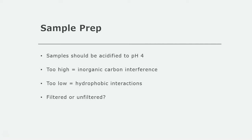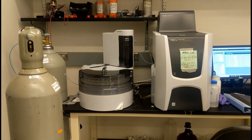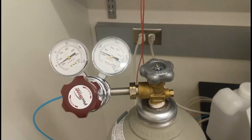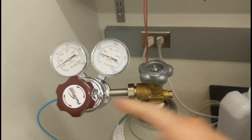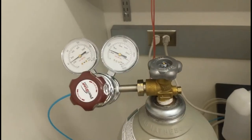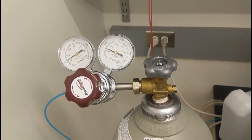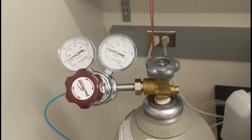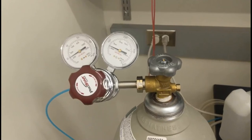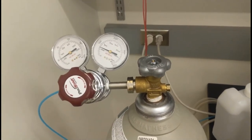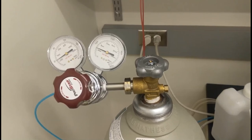Now let's take a look at the instrument. The first step is to open the main valve on the gas cylinder, and then open the pressure regulator. The pressure regulator should be set at at least 40 psi. If the flow rate is too high, you're going to get sloppy, inconsistent peaks, and if it's too low, you won't get any peaks at all. You also need to make sure that there's adequate pressure in the tank — if it's too low, you might run out of gas throughout your run. Keep in mind that for every 100 samples you run, it's going to use about 400 to 500 psi from the tank.